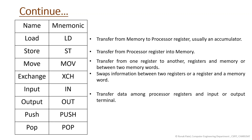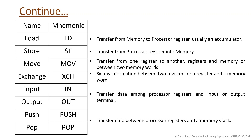Exchange swaps information between two registers or a register and a memory word. Input/output transfers data between processor registers and input or output terminals. Push and pop transfer data between processor registers and a memory stack — push places data from a register onto the top of the stack, and pop removes data from the top of the stack.